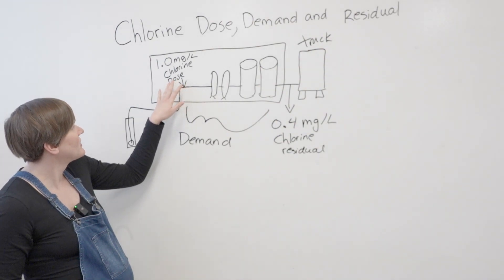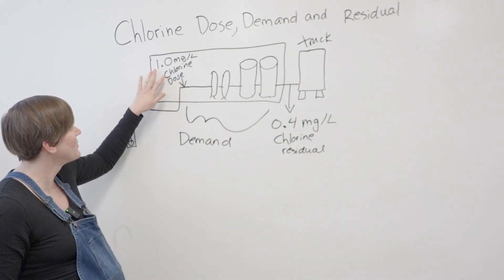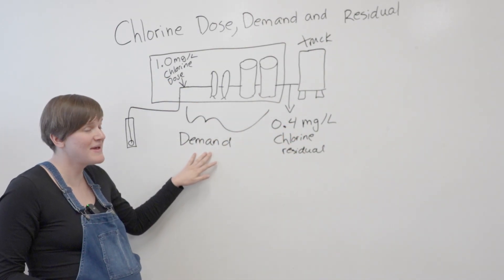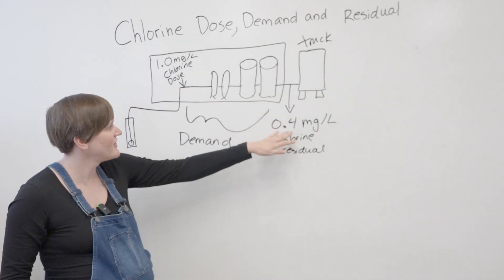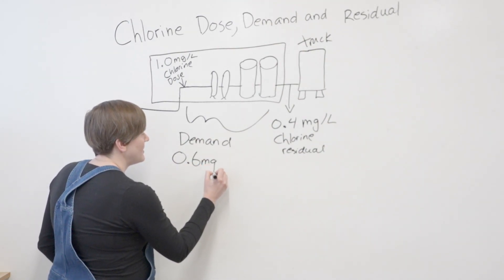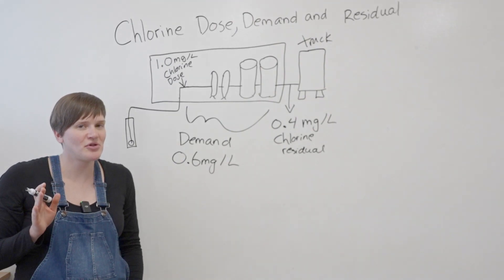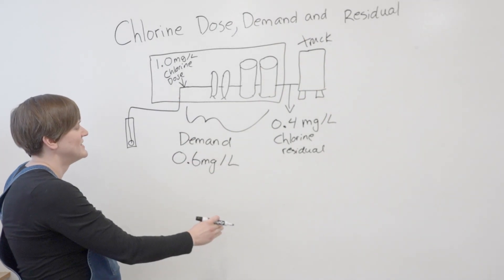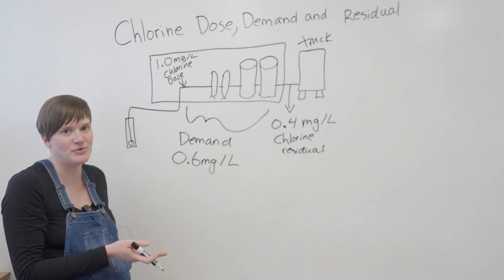It's the difference between the chlorine dose and the chlorine residual. So looking at it like this, if we start with 1 and we're left with only 0.4, the demand is going to be the difference between these two numbers. So if we go 1 minus 0.4, we get 0.6 milligrams per liter. This is how the concept of chlorine dose, demand, and residual works. You're adding the dose, you're left with the residual, and the demand is the difference - the part that's being used up.